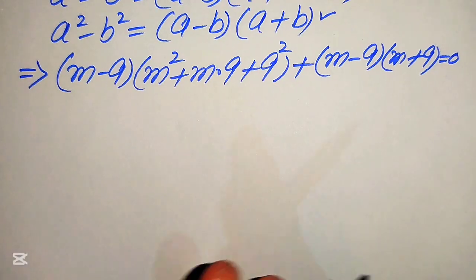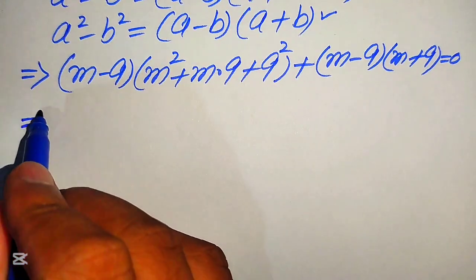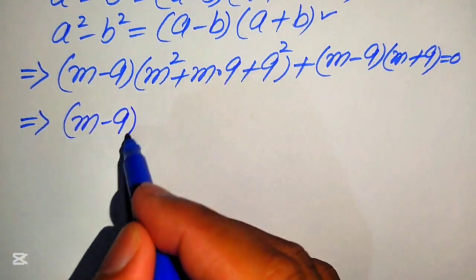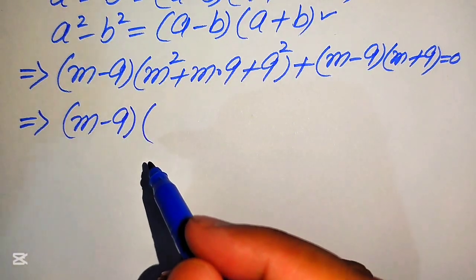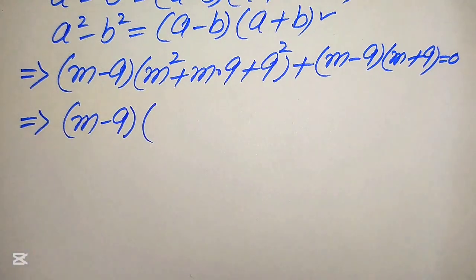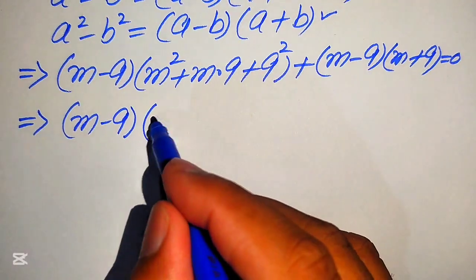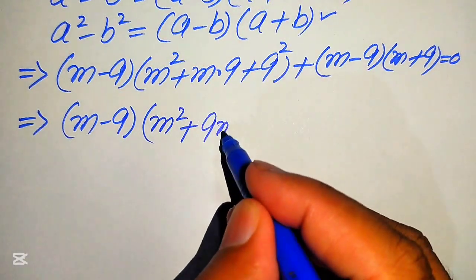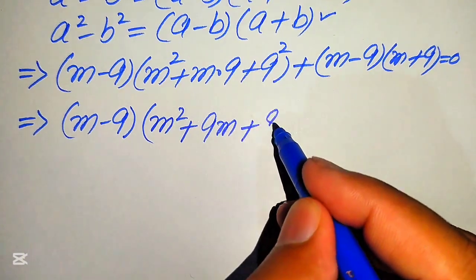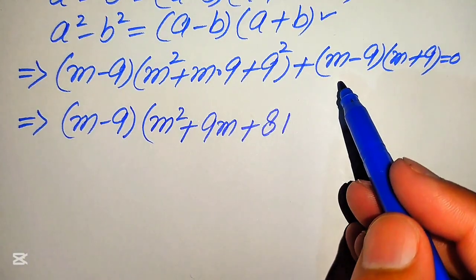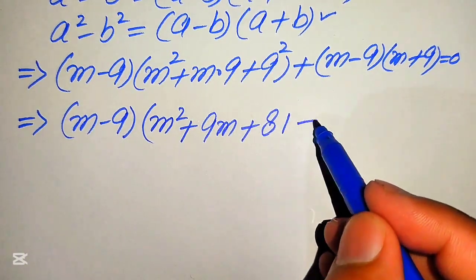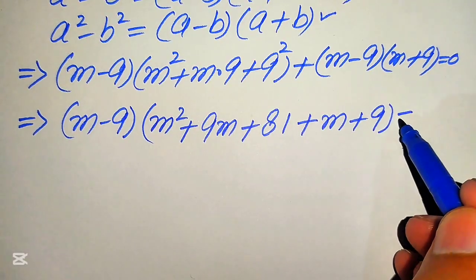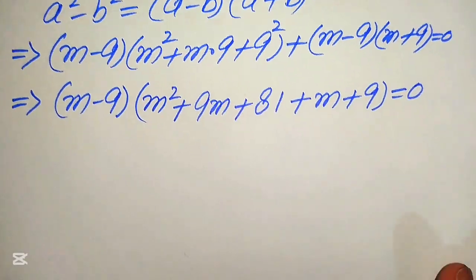We take (m minus 9) as a common factor. The remaining terms give us m squared plus 9m plus 9 squared, which equals 81, and from the second factor we get m plus 9. So the factored equation is (m minus 9)(m squared plus 9m plus 81 + m + 9) equals 0.